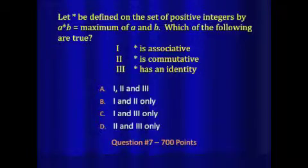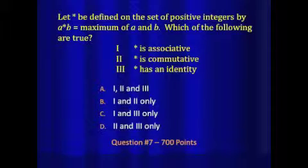Question 7 for 700 points. We're going to let star be defined on the set of positive integers by A star B — the output will be the maximum of A and B.